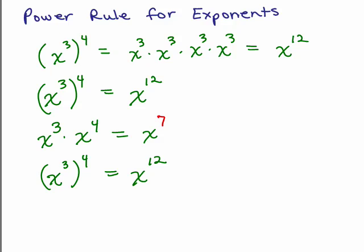How about this one? What if you had a to the 12th to the 10th power? You could do that the long way as well. You could write out a to the 12th 10 times, multiply it out and add, or the simpler way would be simply to multiply 12 times 10 and get a to the 120th.